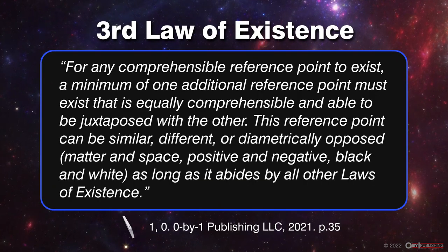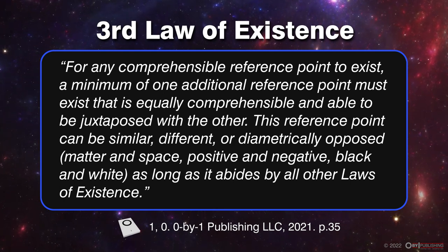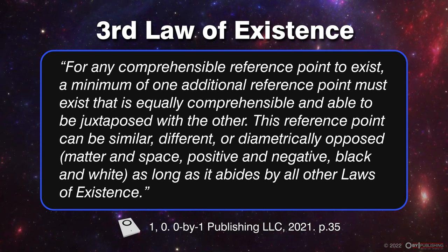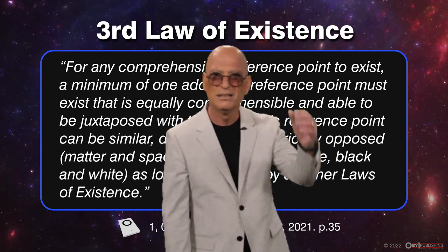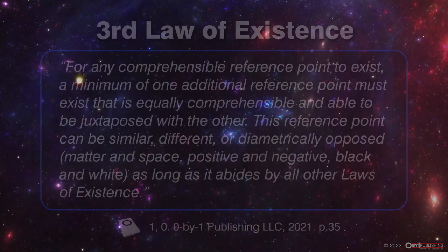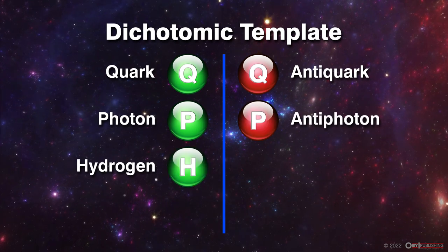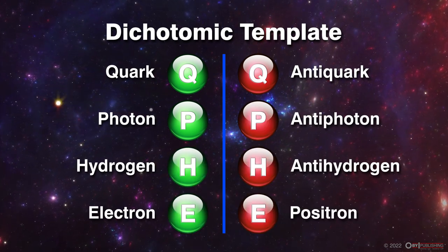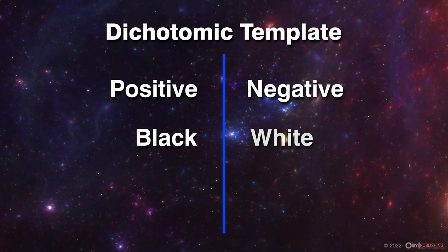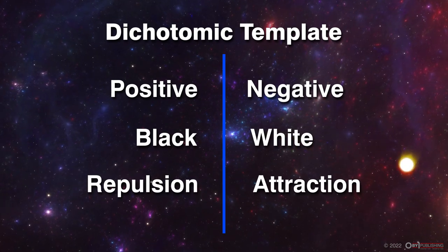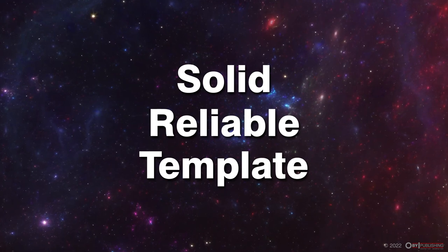Third law of existence: for any comprehensible reference point to exist, a minimum of one additional reference point must exist that is equally comprehensible and able to be juxtaposed with the other. This reference point can be similar, different, or diametrically opposed, as long as it abides by all other laws of existence. This law references a strange dichotomic template that seemingly orchestrates the cosmos — every particle that makes up the cosmos has its own antiparticle. Positive is mirrored with negative, black is balanced with white, and repulsion counters attraction. It's a solid, reliable template that's been in effect since the dawn of existence.